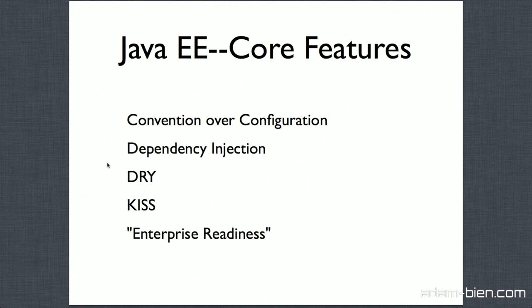In the JPA case, if you have a persistent entity with attributes and all the attributes are persistent, you don't have to configure that. What you have to configure is the exception from the rule — for instance, if you had a transient attribute, you would have to declare it as transient. And for dependency injection, as in the CDI case, if there is only one possibility, you can just write @Inject without any additional configuration. If it were ambiguous, you would have to configure it.